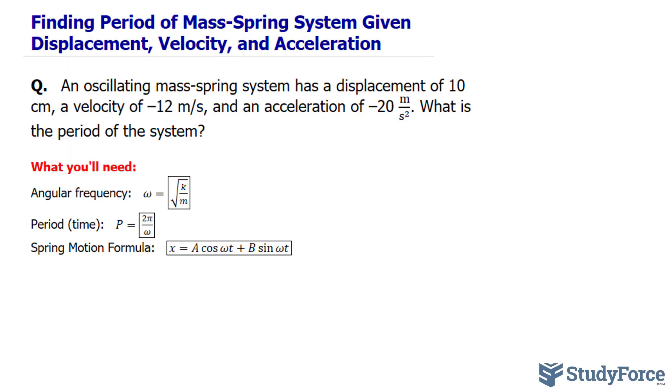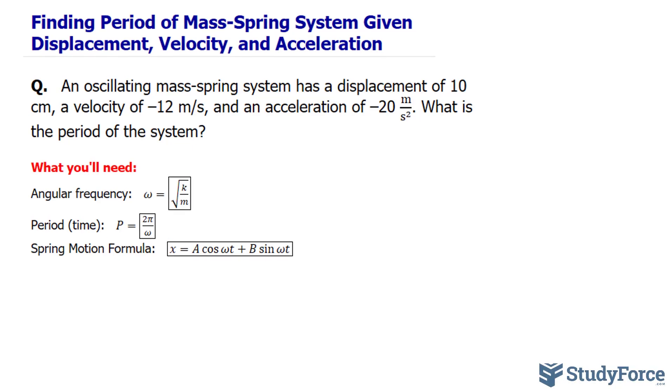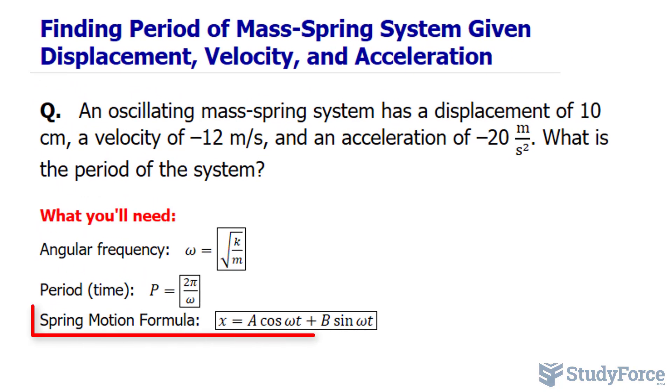Before we can find anything related to the period, we need to somehow start modeling this scenario into an equation. Shown here is what a spring motion equation looks like for displacement. Depending on the information, the equation will either be modeled using sine or cosine. For example, we are told that at time zero, the displacement is 10 centimeters.